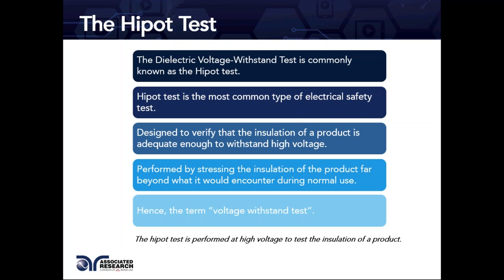The test is designed to verify that the insulation of a product is strong enough to withstand high voltage for a given amount of time. The insulation of an electrical product is stressed with high voltage — far beyond what it would encounter during normal use. If a device is normally plugged into a 120-volt or 240-volt wall outlet, the Hypot test applies a much higher voltage.